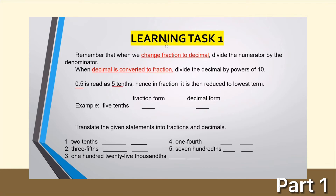0.5 is read as 5 tenths. How do you write this in fraction form? That is 5 over 10. As you can see, 5 over 10 can be reduced to lowest terms — both are divisible by 5. Five divided by 5 is 1, and 10 divided by 5 is 2. So the simplest form of 5 tenths is 1 half, or 0.5 in decimal form. Remember, if a fraction can be reduced, you need to reduce it to lowest terms.